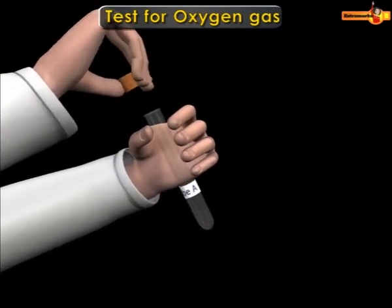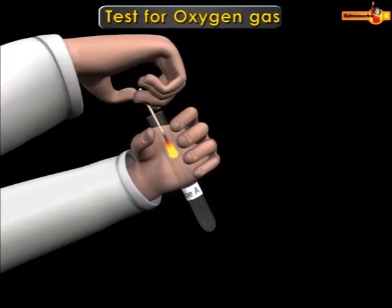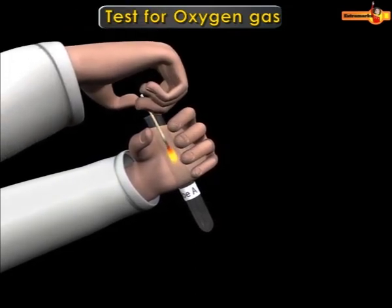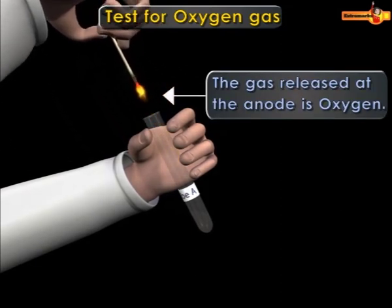Now take out the test tube A and bring the glowing splint close to the mouth of the test tube. The ignition of the glowing splint proves that the gas in the test tube A is oxygen.